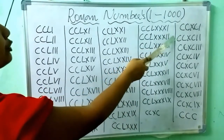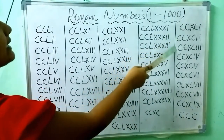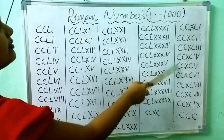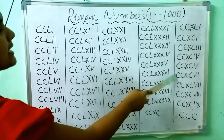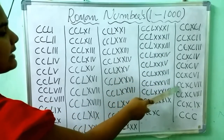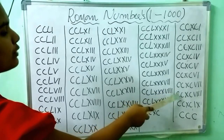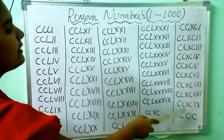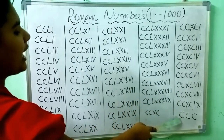291, 292, 293, 294, 295, 296, 297, 298, 299, 300.